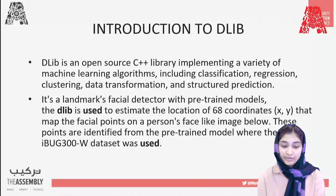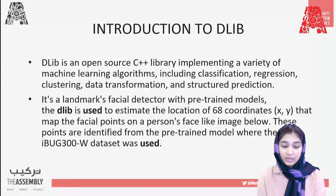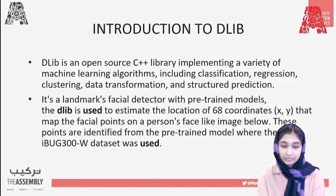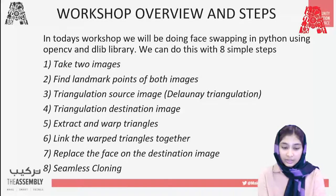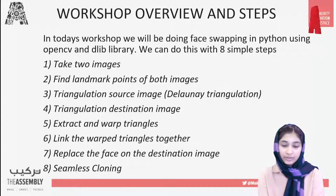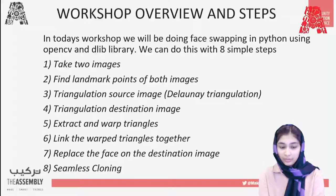These points are identified from the pre-trained model where the IBU-G300W dataset was used. In today's workshop, we'll be doing face swapping in Python using OpenCV and Dlib. We can do this with eight simple steps.